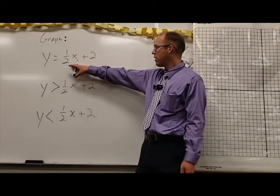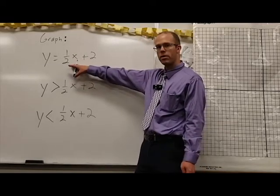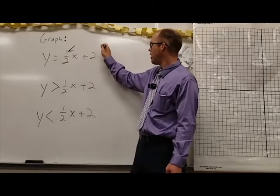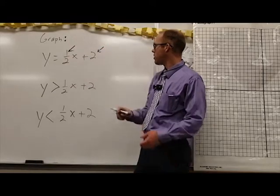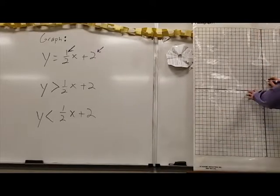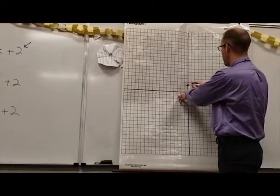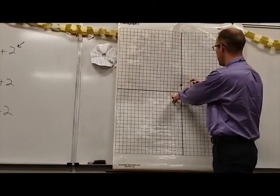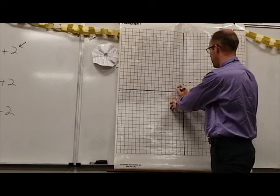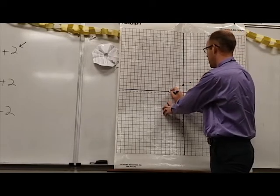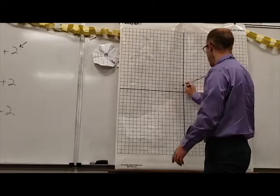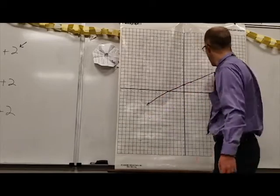I'm going to go ahead and graph this one — something we've done in the past. We see that our slope is one-half and our y-intercept is two. Our y-intercept is two, and our slope is one-half, so we're going to go up one and right two, and we can go down one and left two, giving us a nice line for that equation.